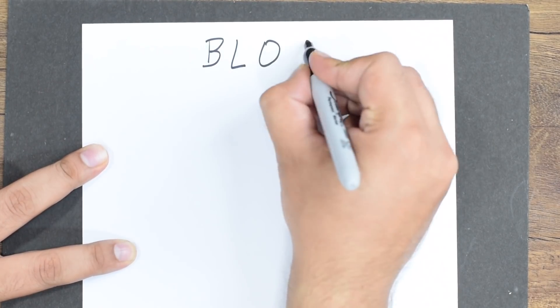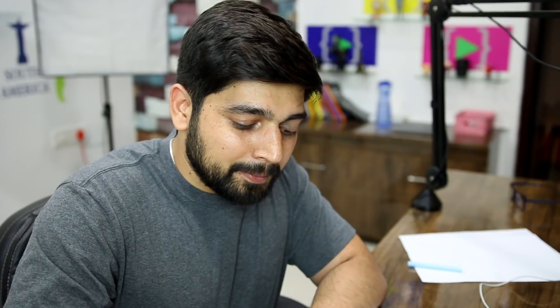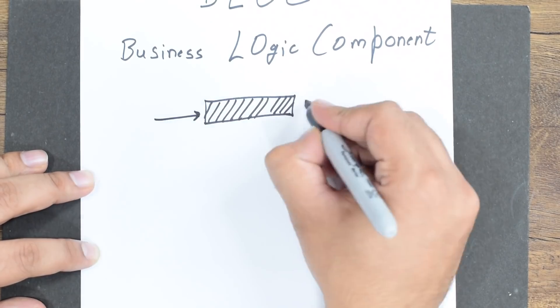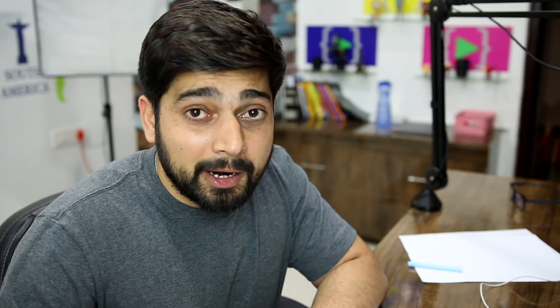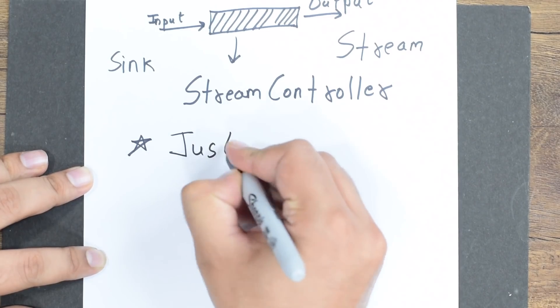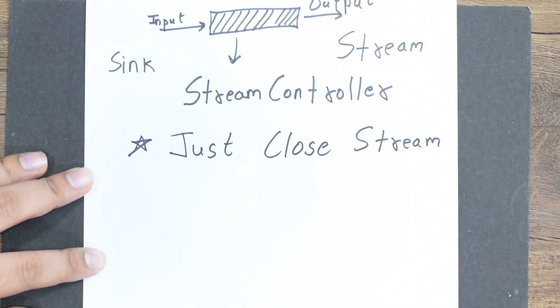Let's write some notes so we can understand once and for all what BLoC is. BLoC stands for Business Logic Component. The whole idea of this BLoC is what goes in and what comes out. The input part is known as sink — we call it sink in for reference, but it's actually just called sink. The output part is known as stream. And the blue box we've been talking about is actually your stream controller. One important star note: always close your stream. Keep that in mind — it's going to be useful a little bit later.